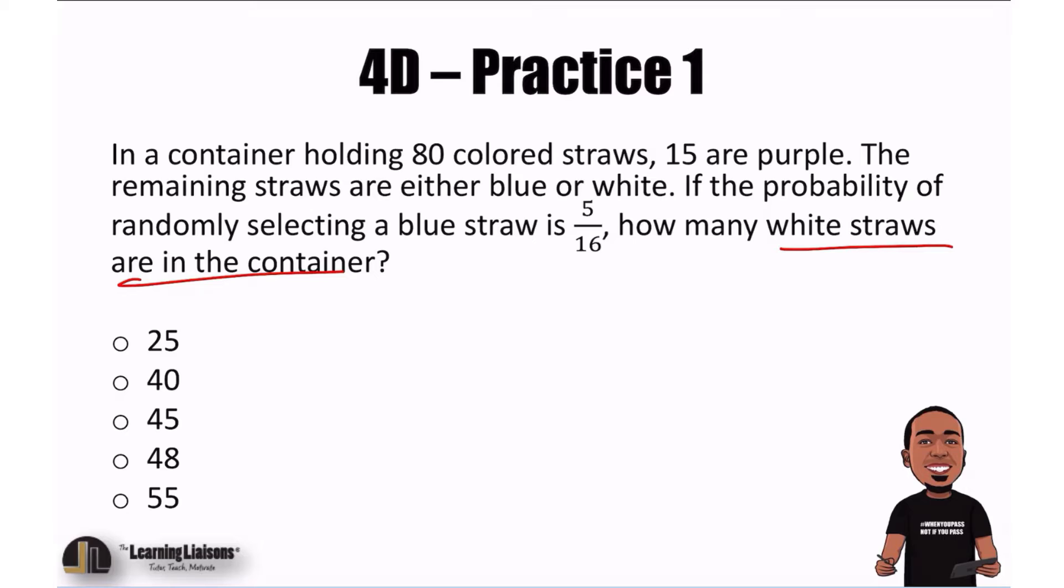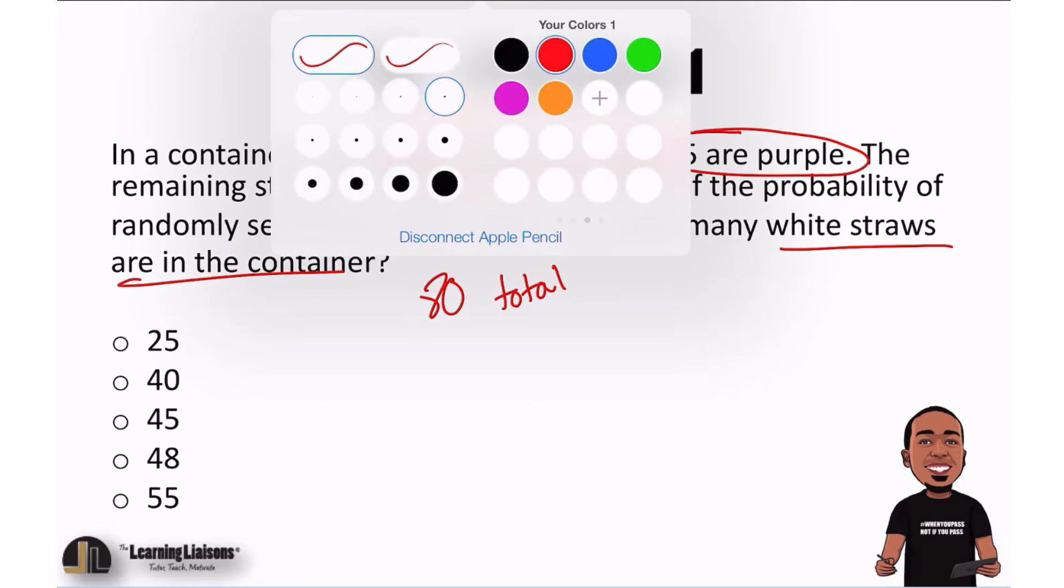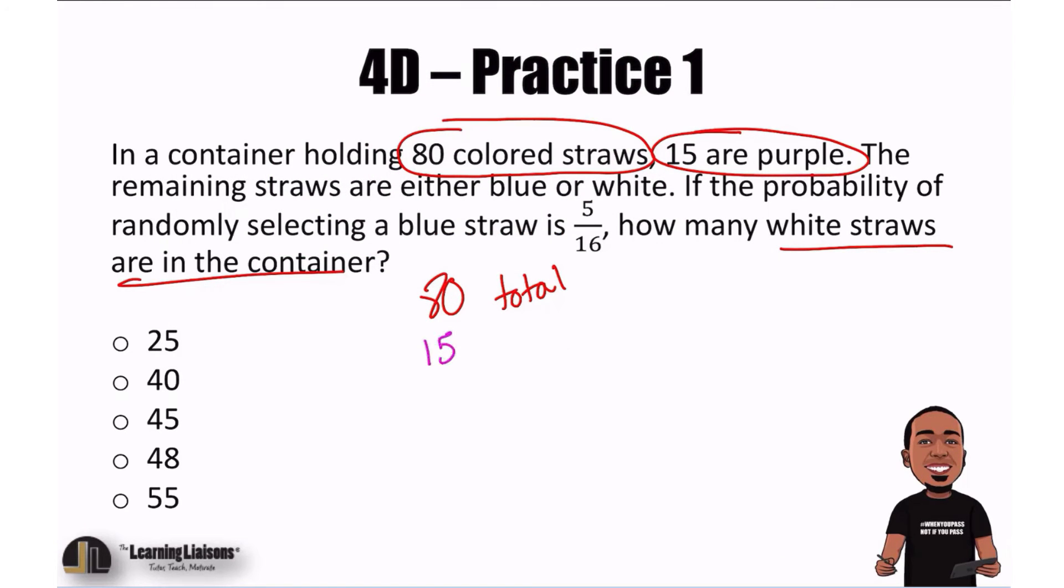So let's make a plan. We know that there are 80 total colored straws. 80 total. 15 are purple. So 15 are purple. I'll just use purple for that. 15 purple.